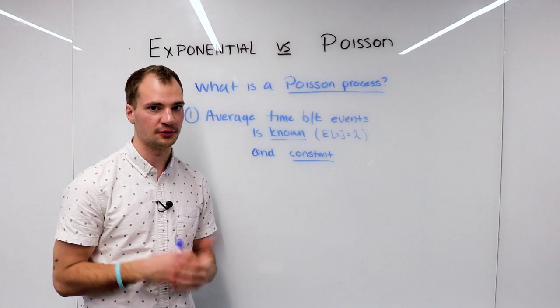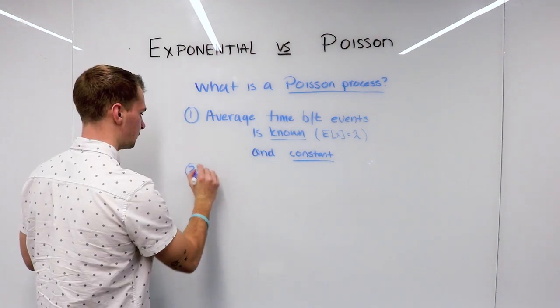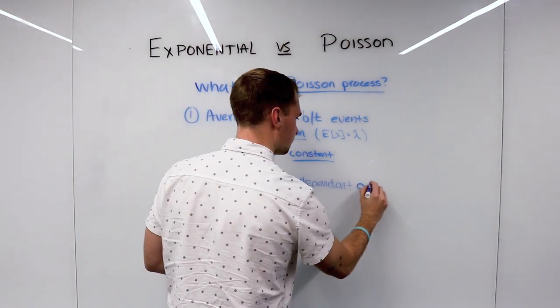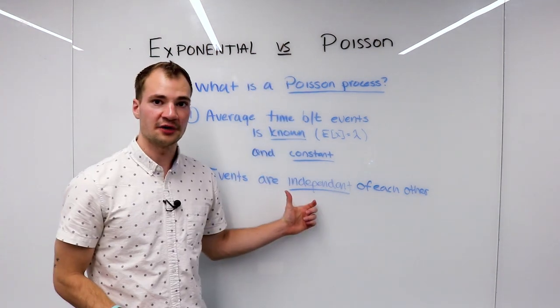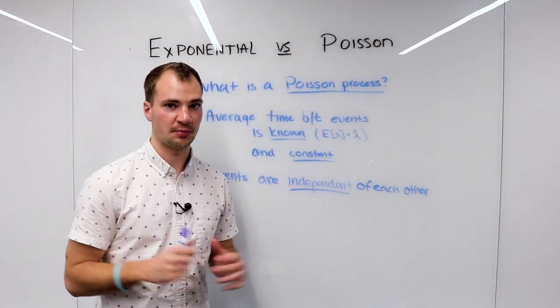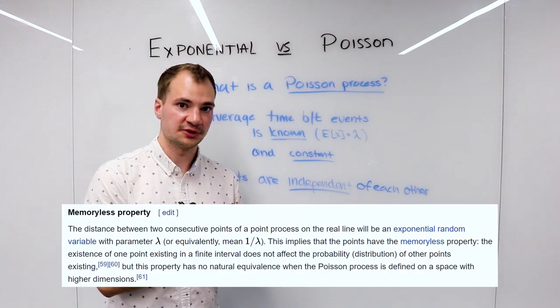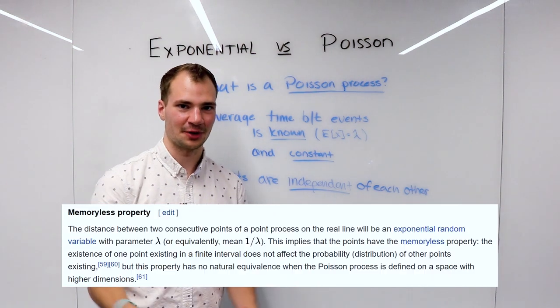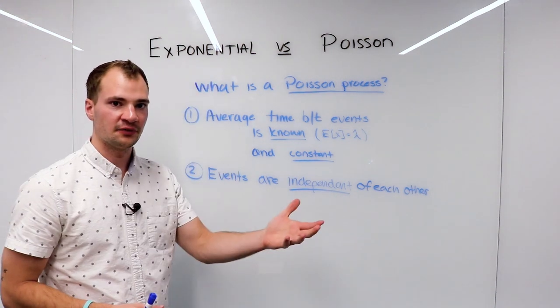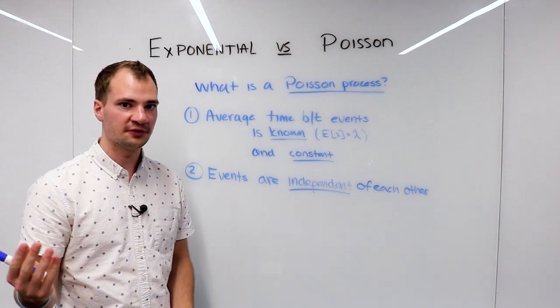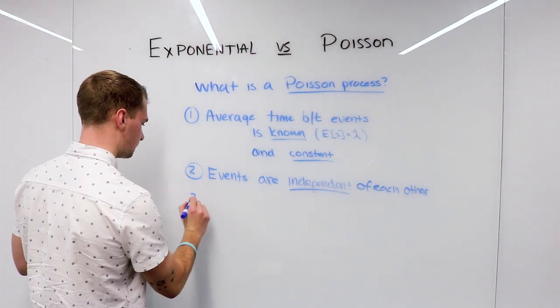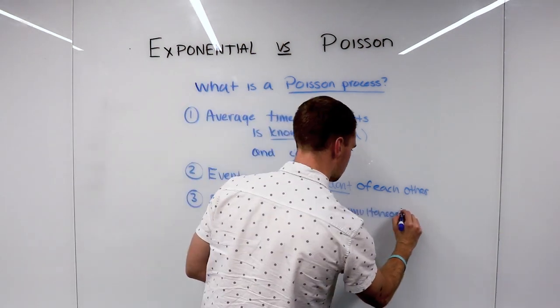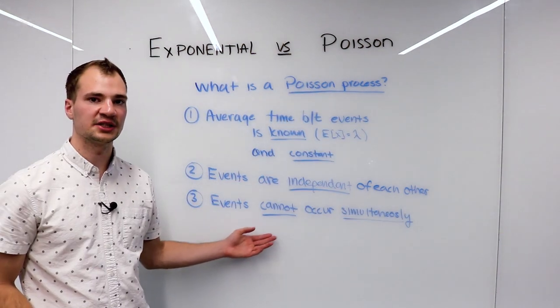This next one says that arrivals or events are totally independent of one another. This leads into the memoryless property, which is a whole other topic we could discuss. So basically, the previous arrival and the next arrival don't affect the arrival that we're looking at specifically now.